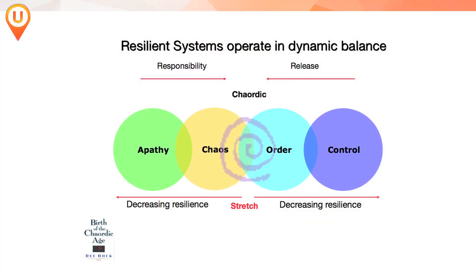But if you move too much to the other side of chaos and don't bring in any order, then you tend to get a lot of apathy because people are just left to their own ends to do whatever they want. There's no sense of why we're doing it or what's expected of you. So a healthy order brings with it a healthy self-organization.